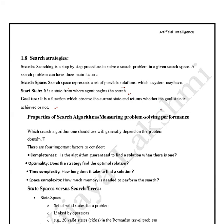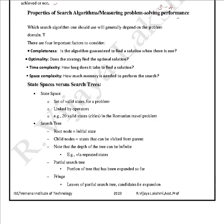This is an important question for exams: what are the properties of a search algorithm, or measuring problem-solving performance? Any search algorithm generally depends on the problem domain. There are four factors to consider: completeness — is the algorithm guaranteed to find a solution when there is one? Optimality — does the strategy find the optimal solution? Time complexity — how long does it take to find the solution? And space complexity — how much memory is needed to perform the search?